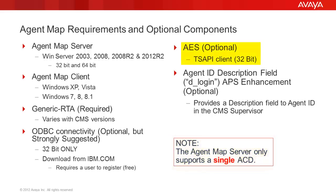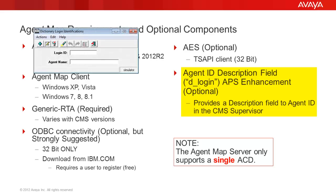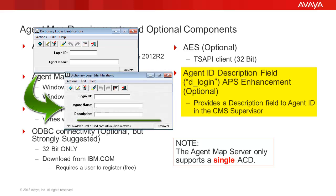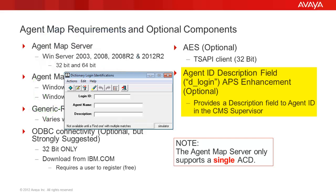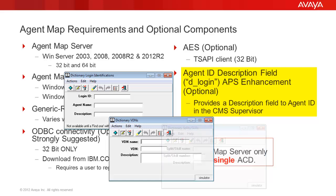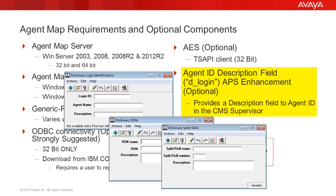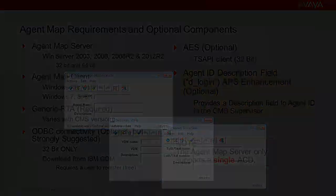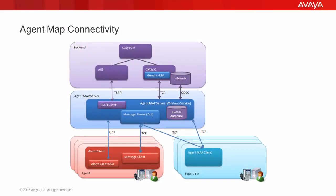In order to provide for third-party call control, the TCAP client must be installed on the AgentMap server that connects to an appropriately configured AES server. A professional services enhancement to the CMS datastore, sometimes referred to as D_login, adds a description field to the agent ID and name database record. The description fields for agents, VDNs, and skills can then be used by AgentMap to classify these sets of data.